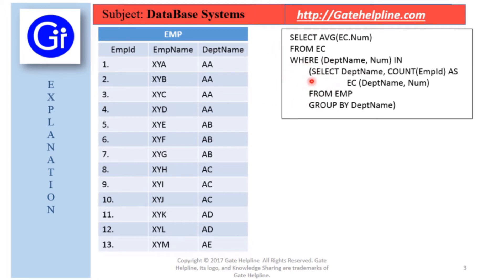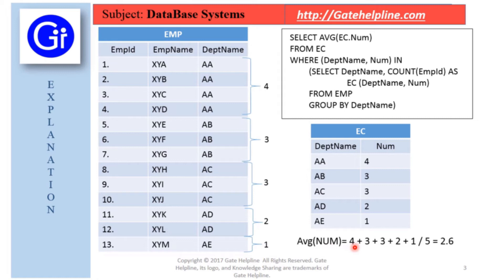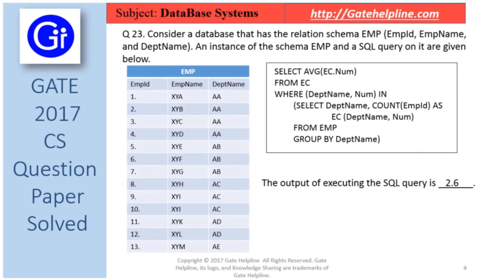Starting from the inner query: we select department_name and the count of employee_id in respective departments, aliased as EC with department_name and num. Department AA has a count of 4. In the outer query, we find the average of EC.num. The inner query output gives department names with employee counts. The average of num = (4 + 3 + 3 + 2 + 1) / 5 = 2.6. So the answer is 2.6.